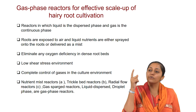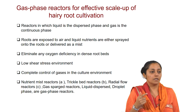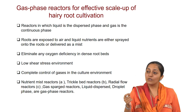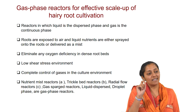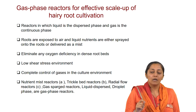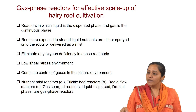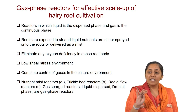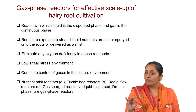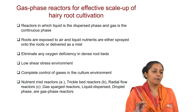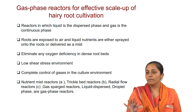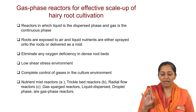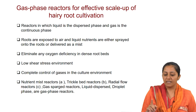You can use a trickle bed system where the droplet size is greater, or use mist where the droplet size is reduced. Even in mist bioreactors, the cycle of mist and the size of the droplet can be optimized for best results. This is one kind of gas phase reactor system — reactors in which liquid is the dispersed phase and gas is the continuous phase.